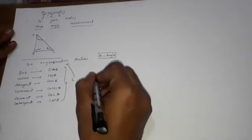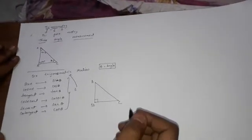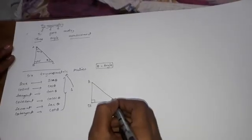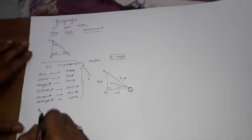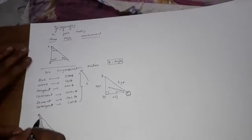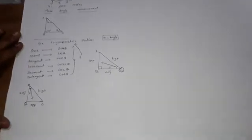For these trigonometric ratios we have some sides. In a right angle triangle ABC where angle B is 90 degrees, if I am looking from angle C, the side opposite to the angle is called the opposite side, the side adjacent to it is the adjacent side, and the inclined side is the hypotenuse. Similarly, if I consider angle A, the side opposite to it is the opposite side, the next side is the adjacent side, and the inclined side remains the hypotenuse.